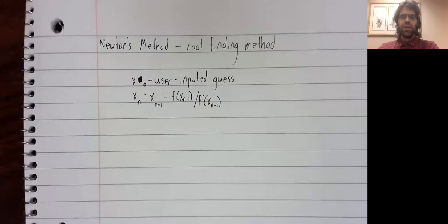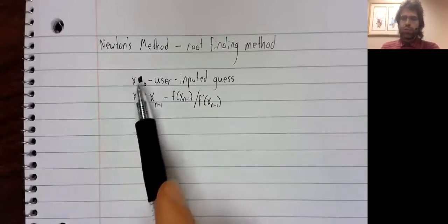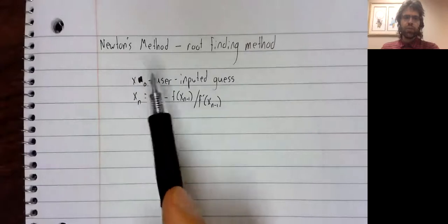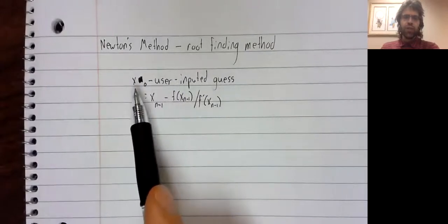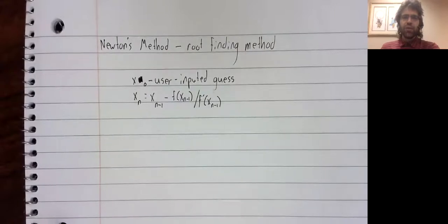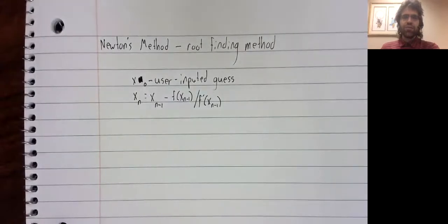Newton's method is a root finding algorithm. And in case you don't recall, here's how it works. The user inputs some guess, and then we use that guess to create a sequence.